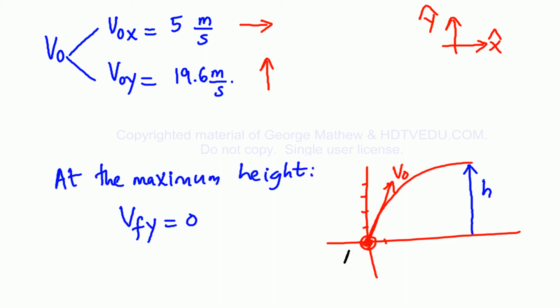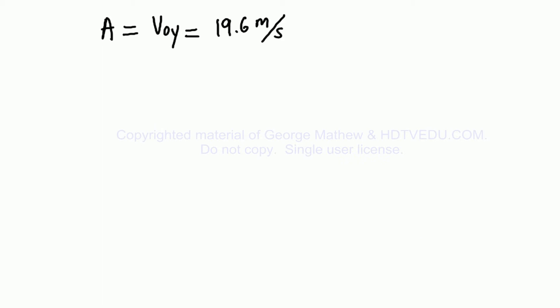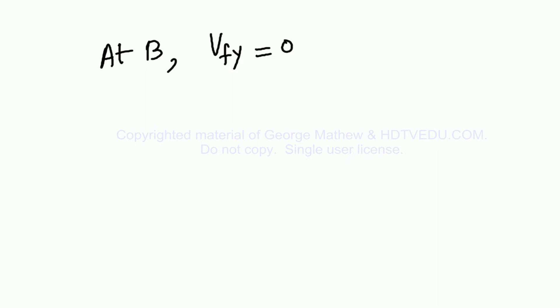Let us define the initial position as point A and point B as the maximum height. At the maximum height, what do we know? We know that the vertical velocity is 0. Instantaneously at point B, the vertical velocity is 0. If the vertical velocity was not 0, the ball would have gone even further up. So the fact that the vertical velocity equals 0 means it cannot go beyond that point.